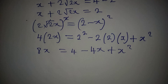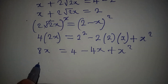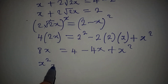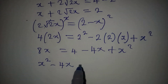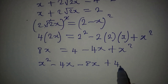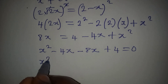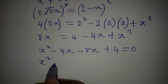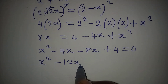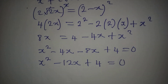Rearranging this in a better way: x² − 4x − 8x + 4 = 0, which gives x² − 12x + 4 = 0.